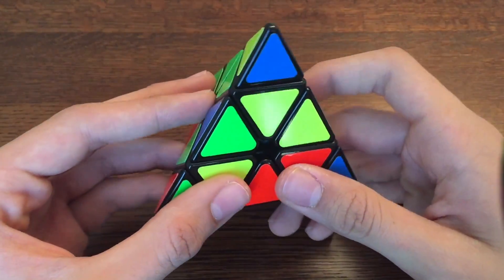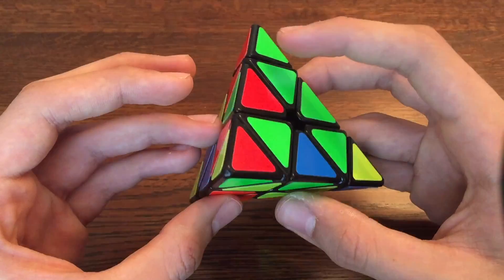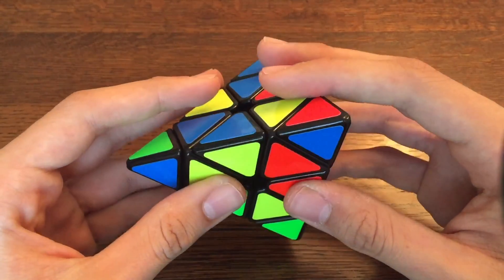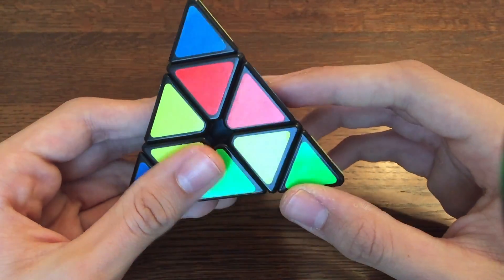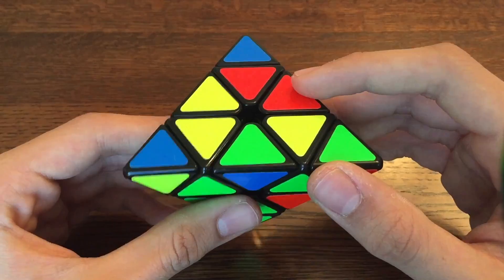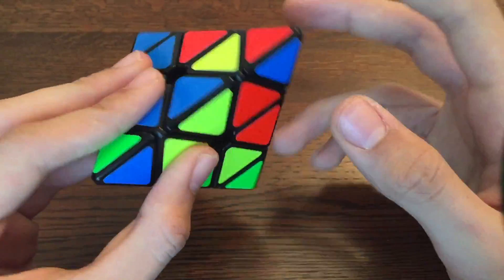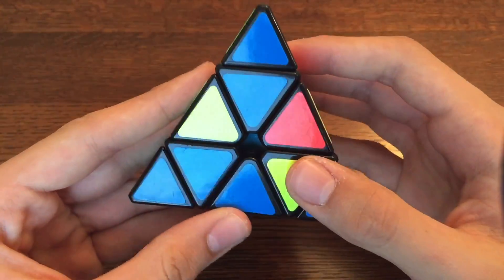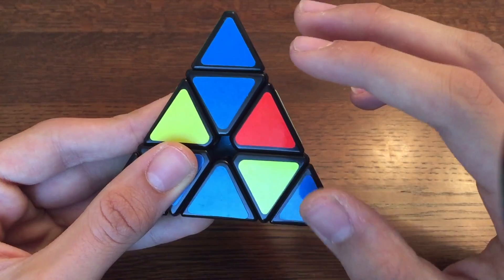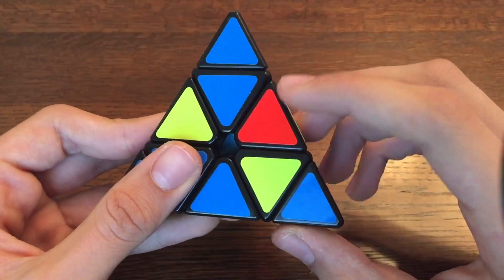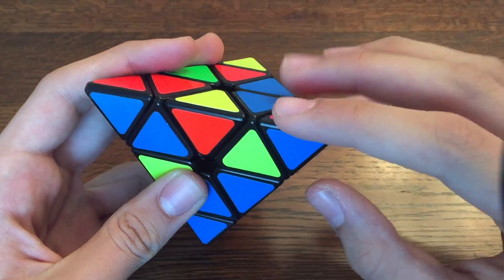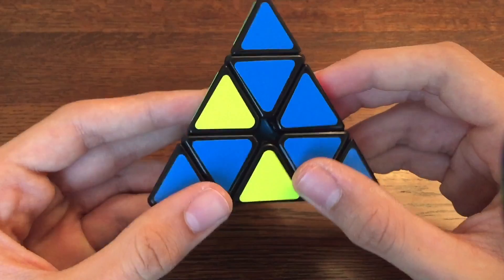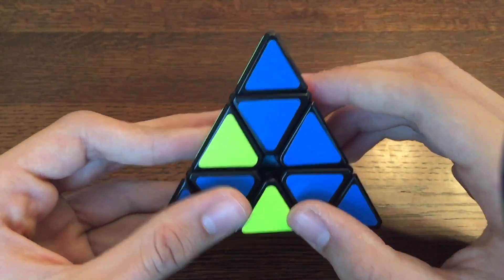All right, now that we have a scrambled Pyraminx, we need to get the full blue side. I just prefer the blue side, but you can actually get whatever side you want to first. And how we get the blue side first is to find three blue corners. So we have two right here, and then there's a third one right here. So I'll just rotate the corners up, and there you go. Now you have to find the center pieces that go along with the corners. And the center pieces are basically connected to the corners, so you won't really have to find them. And now there you go, I have the three center pieces, like a radiation symbol.